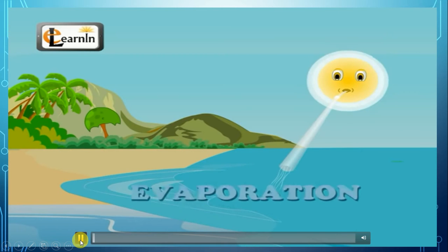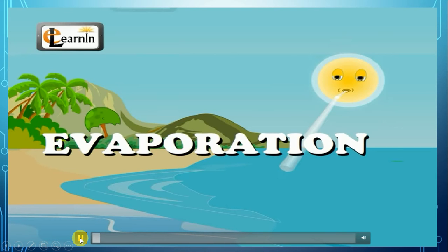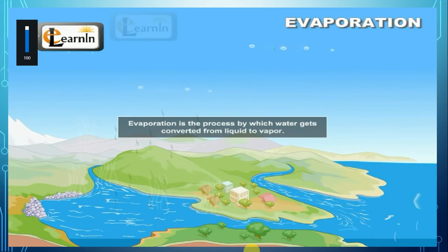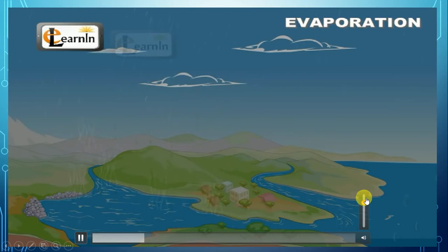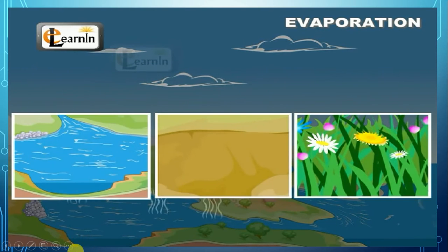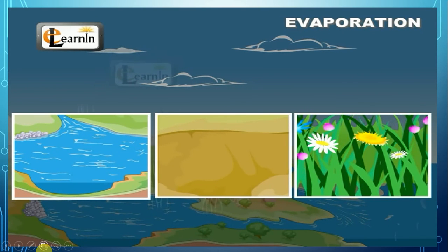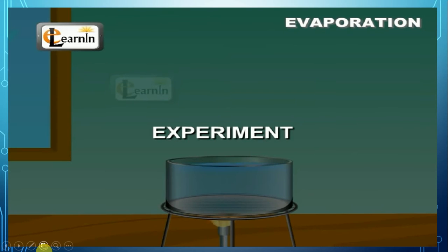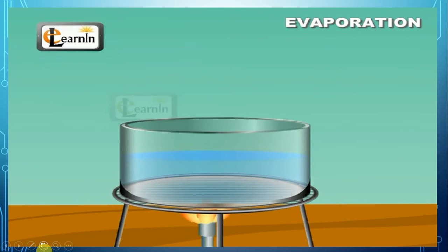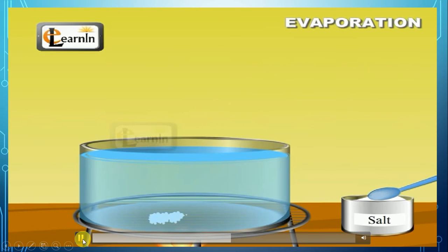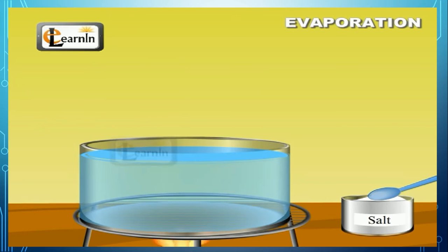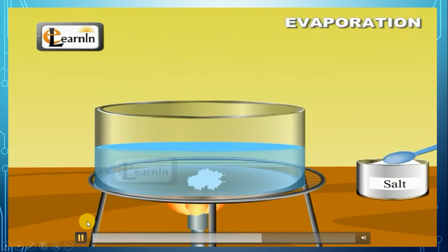Let's know more about evaporation in this video. Evaporation is the process by which water gets converted from liquid form to a vapor form. Evaporation from the oceans accounts for 80% of the water delivered as precipitation. Place a beaker containing water on a stove, let the water boil. If you continue to heat it, the water turns into steam and evaporates. Add some spoons of salt to water in another beaker and stir it well. The salt gets dissolved. Now heat the salt solution — the water gets evaporated, leaving the salt behind.